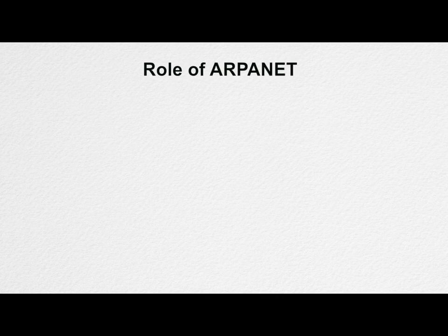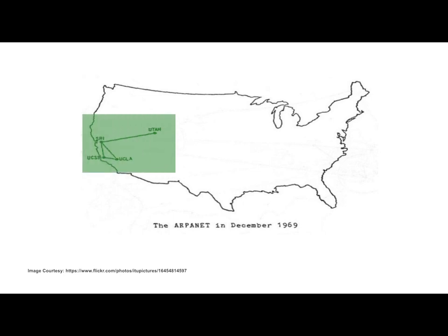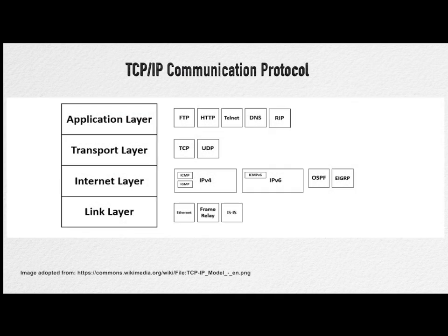The major task that ARPANET had to play was to develop rules for communication, i.e., protocols for communicating over ARPANET. ARPANET in particular led to the development of protocols for inter-networking, in which multiple separate networks could be joined into a network of networks. It resulted in the development of the TCP/IP protocol suite, which specifies the rules for joining and communicating over ARPANET.